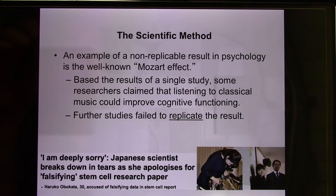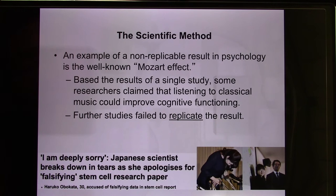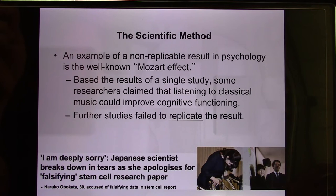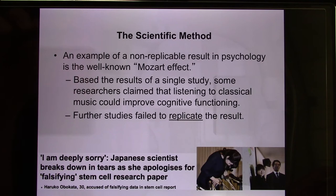They even claimed this lady, who was in her 30s, would one day receive the Nobel Prize. But after a few months, other groups — and there's not just one science lab studying stem cells — tried to replicate her result based on what she described in her paper. They could not replicate her result. At first she claimed it was because she was better than them. But people kept criticizing her, and eventually she apologized, admitting she had made up some data and deeply regretted it.